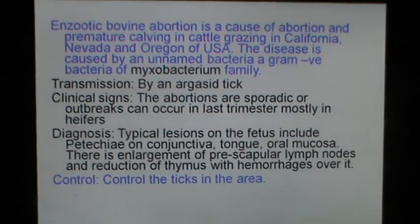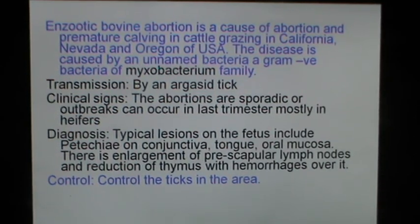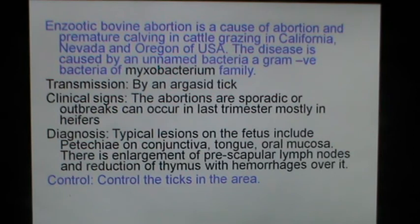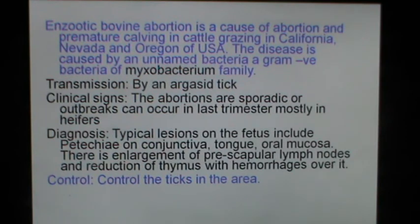Epizootic bovine abortion is the cause of abortion and premature calving in cattle grazing in California, Nevada and Oregon of the USA. The disease is caused by an unnamed gram-negative bacteria of the Myxobacteria family. Transmission is by an epizootic tick. Clinical signs include sporadic or outbreak abortions in the last trimester, mostly in heifers. Typical lesions on the fetus include petechiae on conjunctiva, tongue and oral mucosa. There is enlargement of pre-scapular lymph nodes and reduction of thymus with hemorrhages. Control of the ticks in the area is suggested.